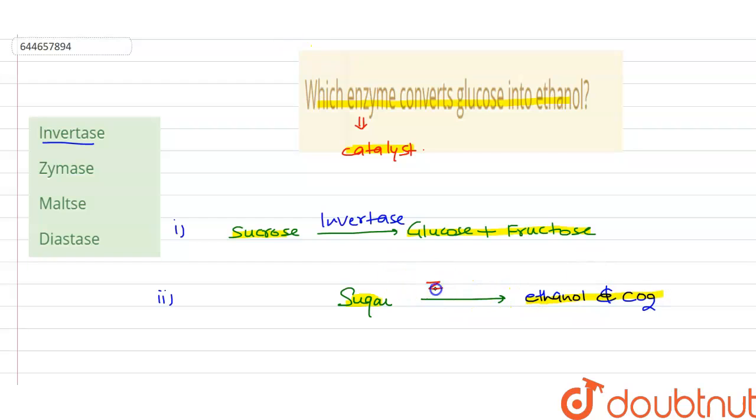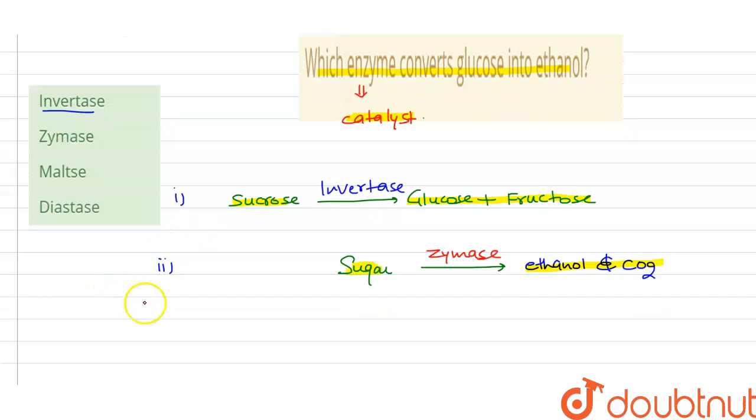Now, the function of maltase. Maltase is an enzyme that catalyzes the hydrolysis of the disaccharide maltose to the simple sugar glucose. This is the function of maltase.